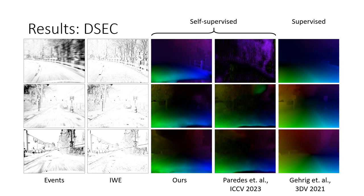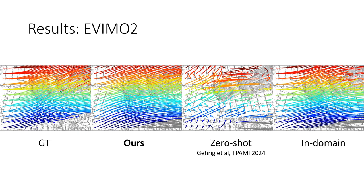Additionally, we provide results for the DESEC optical flow benchmark. Our method shows state-of-the-art performance among self-supervised methods. The visualizations show an improved delineation of objects compared to previous methods. Here are some more results from the EVIMO2 test set.